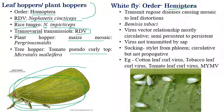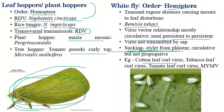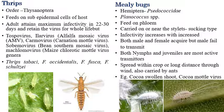Whitefly belongs to the order Hemiptera. The main whitefly species involved in transmitting plant viral diseases is Bemisia tabaci. Whitefly transmission is circulative or semi-persistent to persistent type. Whiteflies mainly consist of sucking stylet-type mouthparts. Examples of viruses transmitted by whiteflies include cotton leaf curl virus, tobacco leaf curl virus, tomato leaf curl virus, and mung bean mosaic virus.